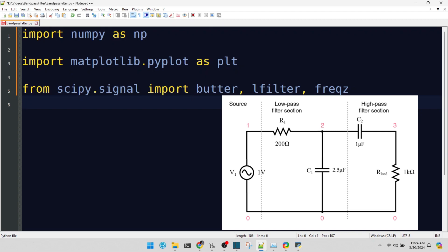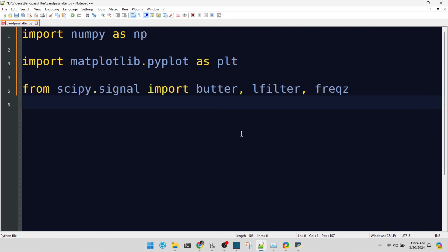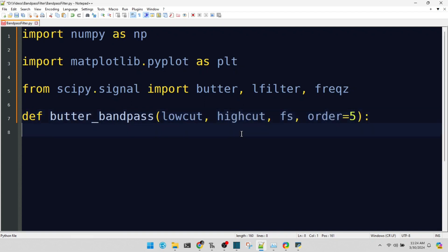Now, let's define a function for creating a bandpass filter using Butterworth filter design. This type of filter is famous for its flat frequency response in the passband. Essentially, it's the audio engineer's best friend.